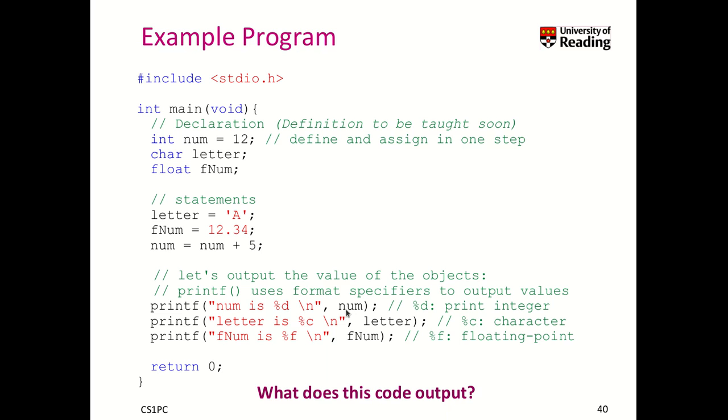It takes num, but what is num? Well, let's go back. Num initially was 12. Well, num became whatever num was, which was 12 plus 5 makes 17, so it should put 17.